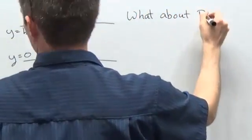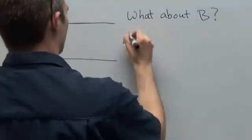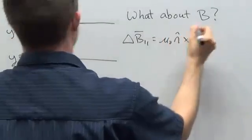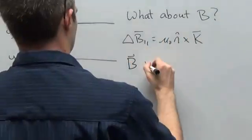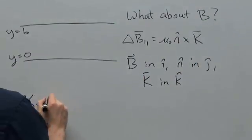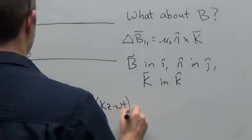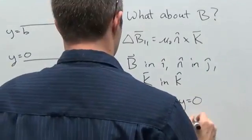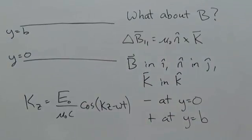And finally, we'll have a condition on the parallel component of B that implies the existence of induced surface currents. With B in i hat and n hat in plus or minus j hat, we'll find that the surface currents are in the k hat direction, and go like E_0 over mu naught c cos(kz minus omega t).